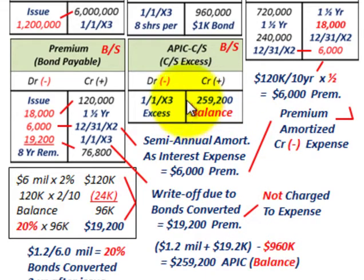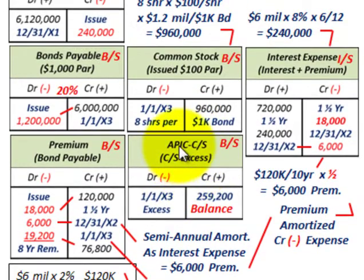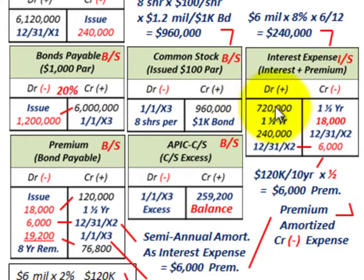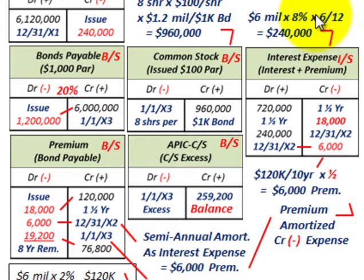Before wrapping up, let's move to the interest expense on the bonds themselves. We had $6,000,000 in bonds at 8% interest, paid semi-annually — six months out of twelve — giving us a semi-annual interest payment of $240,000.